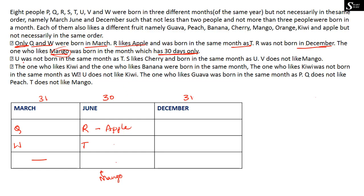The next clue says U was not born in the same month as T. We know T is in June, so U cannot be in June. U also cannot be in March. Therefore the only remaining possibility is that U was born in December.